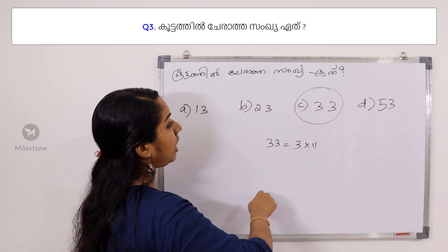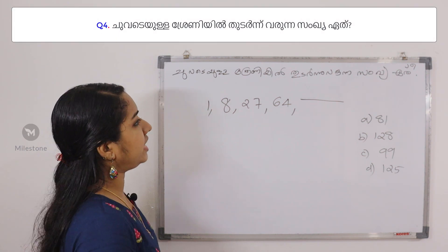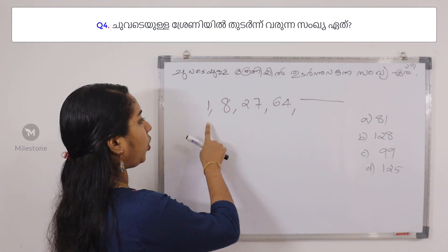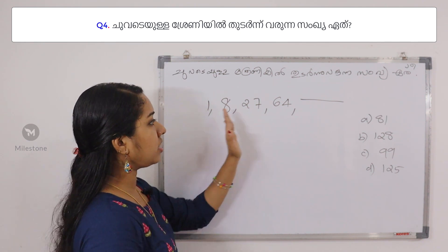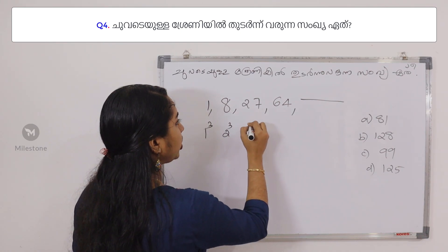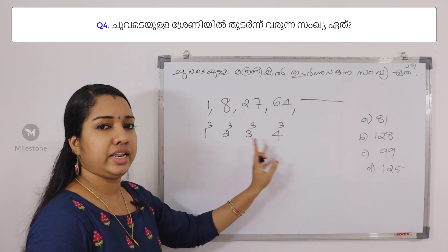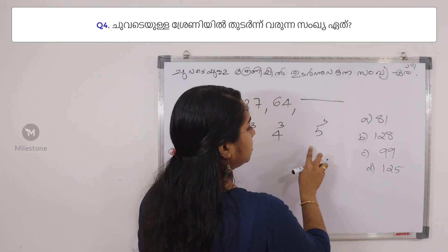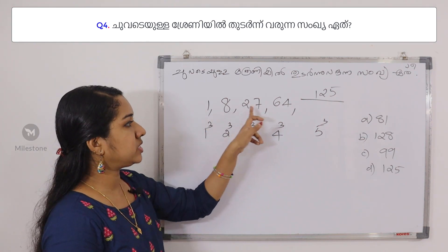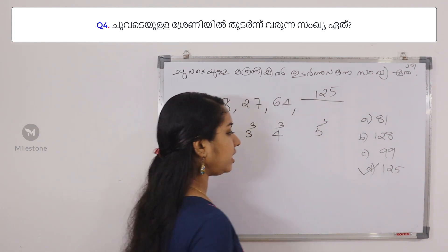So we have a simple question. If you get the number of the first three, you will find the next number. The series is 1, 8, 27, 64. If you want to add a cube — 1 cube, 2 cube, 3 cube, 4 cube. Then 1, 2, 3, 4. If you have 5 cube, 5 cube is 125. Option D is 125.